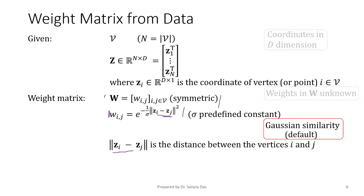This is the Gaussian similarity measure — this expression here — and it will be our default. Let's highlight it.